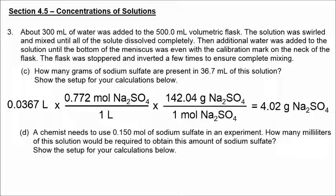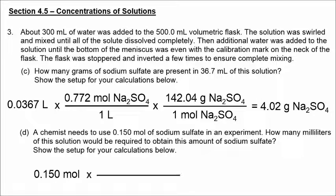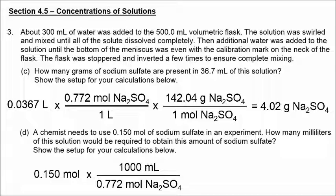In part D, we're converting from moles to volume. We have 0.150 moles. We set up the same conversion factor, but this time putting moles of sodium sulfate on the bottom and 1 liter or 1,000 milliliters on the top. We get 194 milliliters of that solution would be needed.